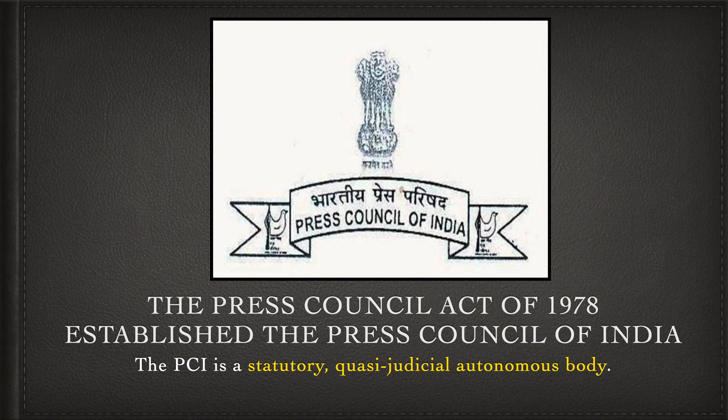A quasi-judicial body is a non-judicial organization that has some judicial power — it can hear cases, make decisions, and impose penalties on the guilty. An autonomous body is a non-governmental organization that is independent and self-governing, with its own rules, regulations, and objectives, and does not depend on any external authority.